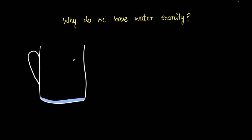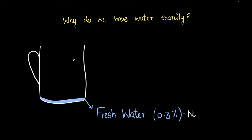Why do we have water scarcity? It turns out that only 0.3 percent of the water on Earth is freshwater — water that is not salty, the water we can use for drinking, cooking, washing, and agriculture. We find this water in lakes, rivers, and groundwater.